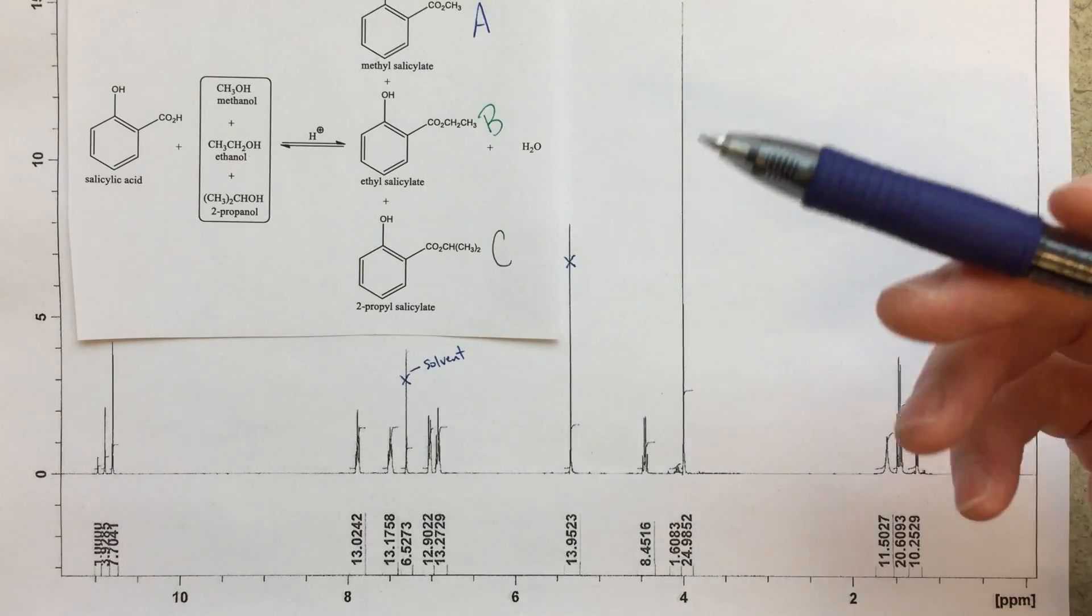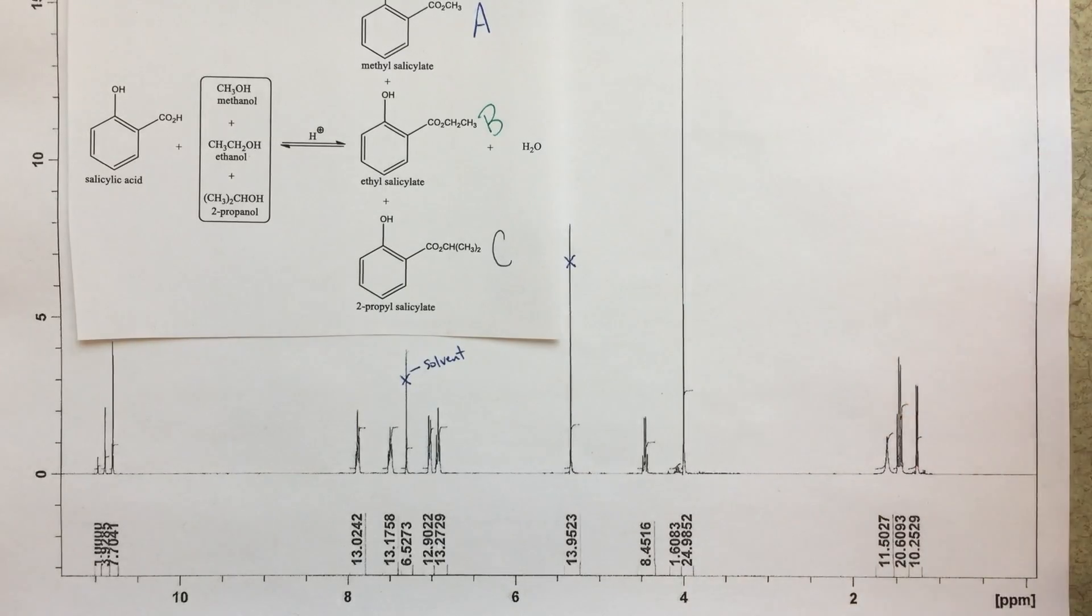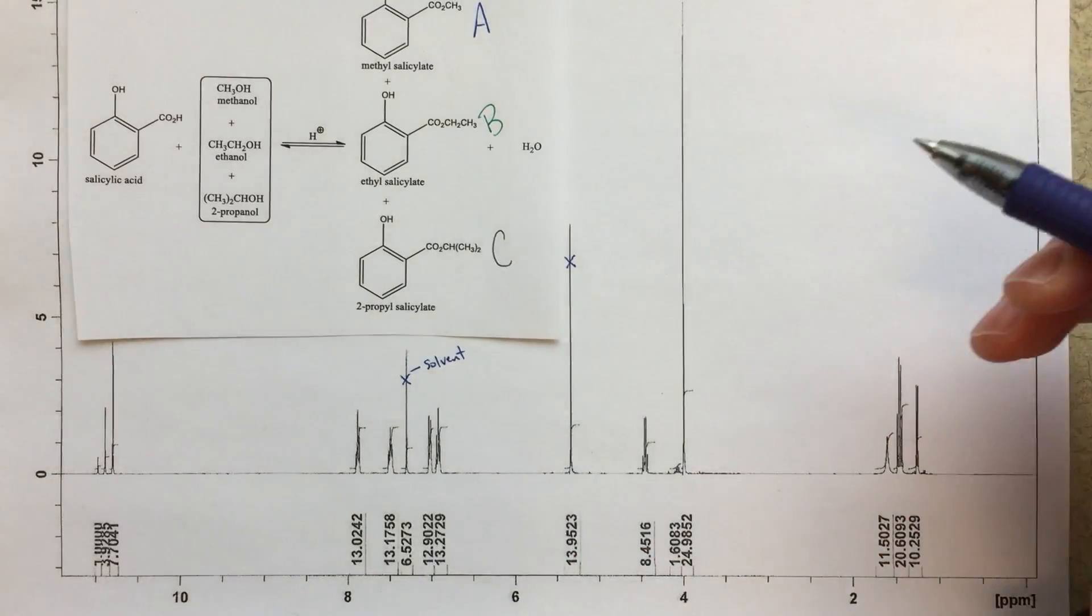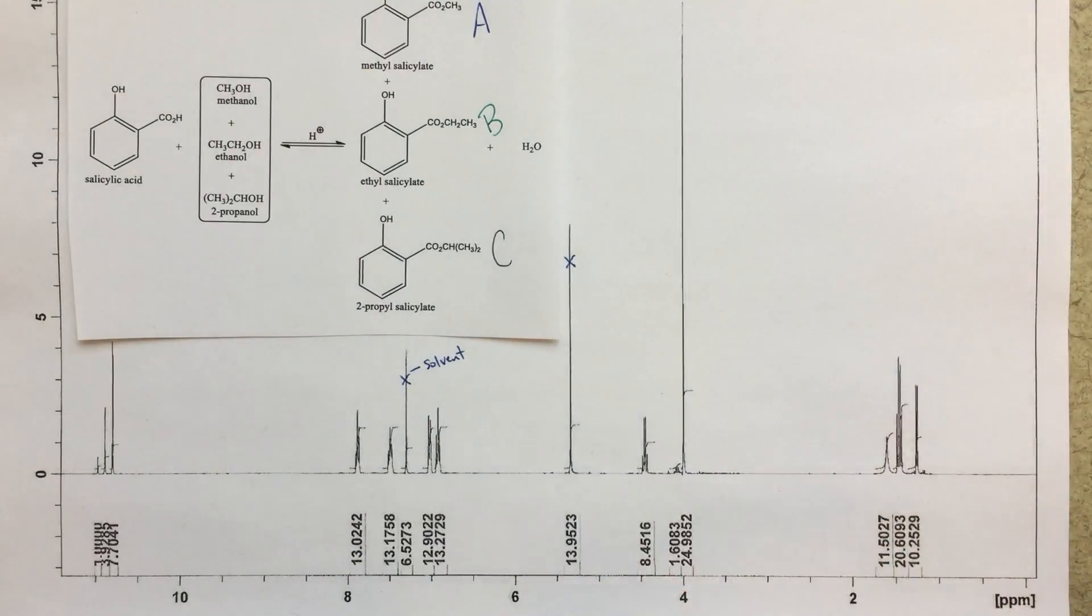But this is what the student told me. So we can assume that it's something we don't need to worry about, it is some impurity. So we're just going to ignore that problem. It could be DCM, but not exactly what I'd expect. But it could be some other solvent, so that's fine. We don't need to worry about it.